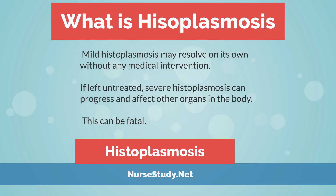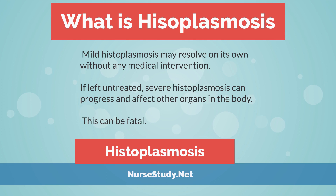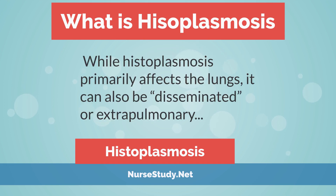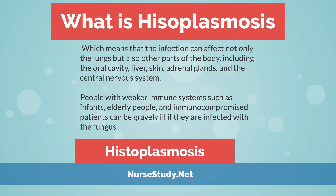Mild histoplasmosis may resolve on its own without any medical intervention. If left untreated, severe histoplasmosis can progress and affect other organs in the body — this can be fatal. While histoplasmosis primarily affects the lungs, it can also be disseminated or extra-pulmonary, meaning the infection can affect not only the lungs but also other parts of the body.